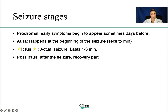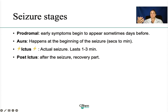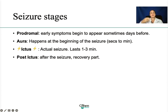An important portion is seizure stages. We have prodromal — meaning before it actually happens. These are symptoms the patient may experience sometimes even days before the actual seizure, such as depression, anger, anxiety, or GI issues. Then you have the aura — just like with a migraine headache, it's almost a warning that something is about to happen. It doesn't always happen, but if it does, a patient may have altered vision, altered hearing, anxiety, a feeling of dread, deja vu, sudden changes in smell or taste, dizziness, or inability to speak.